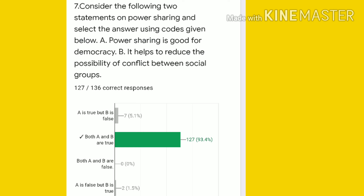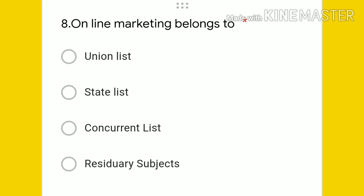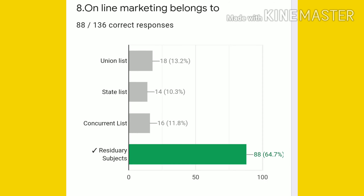Eighth question: online marketing belongs to — union list, state list, concurrent list, or residuary subjects? The answer is residuary subjects, because when the constitution was made these subjects were not available. 88 students gave the right answer.